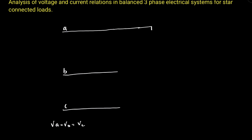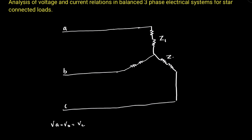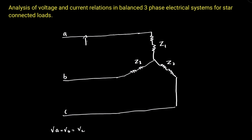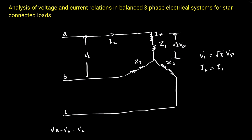The star-connected load can be represented as shown. Since it is a balanced three-phase system, the impedance of all the loads will also be equal. In a balanced three-phase star-connected load, the line voltage VL is equal to root 3 times the phase voltage, and the line current is equal to the phase current. These are the key relations between voltages and currents.